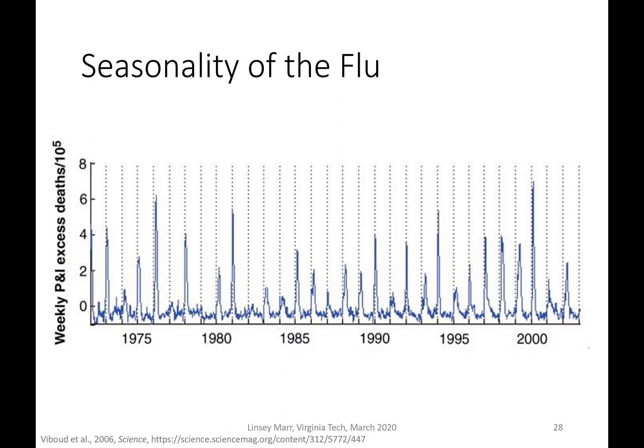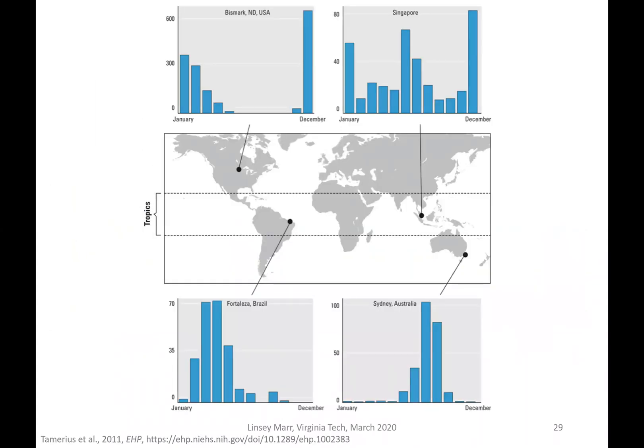This shows the weekly pneumonia and influenza excess death rate over roughly a 30 to 40 year period. You can see there are big peaks in the wintertime, lining up with what I assume are January markers for each year. The peak is often just after January, around February. And that is true — the peaks in influenza, at least in temperate regions, happen during the wintertime.